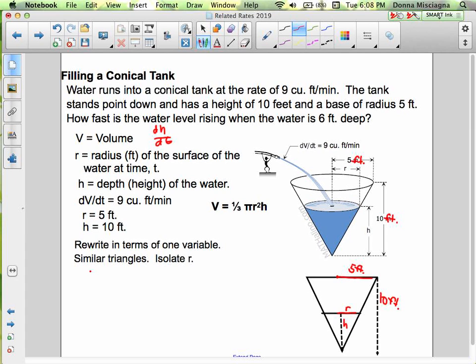r is to 5 as h is to 10. We can cross multiply and write this in terms of r because we're going to replace r. You could reduce the 5 and the 10 to 1 and 2. So two r's equal h. I want to solve in terms of r, so r is h over 2. That makes sense because the radius is half the size of the height. Set it up like this so you don't make any mistakes.